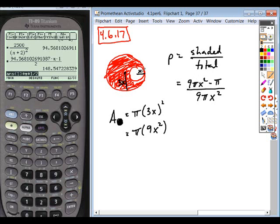Pi times r squared. Well, r is just an x. And so when I look through this, I have 9 pi x squared minus 1 pi x squared gives me 8 pi x squared, all over 9 pi x squared.